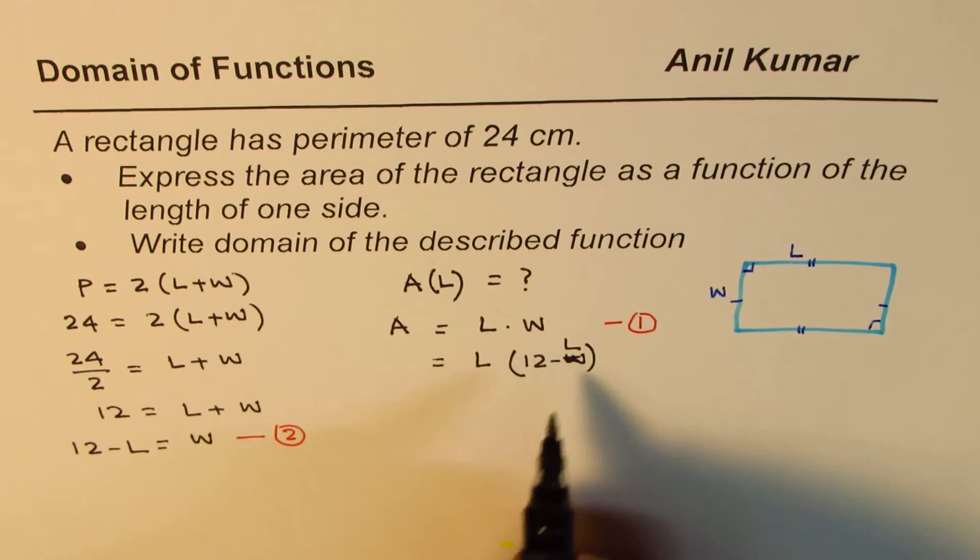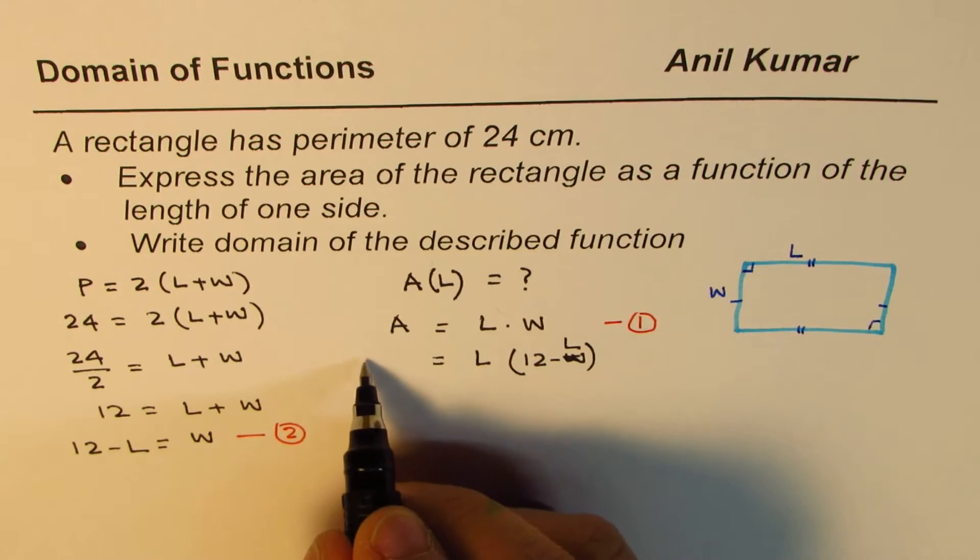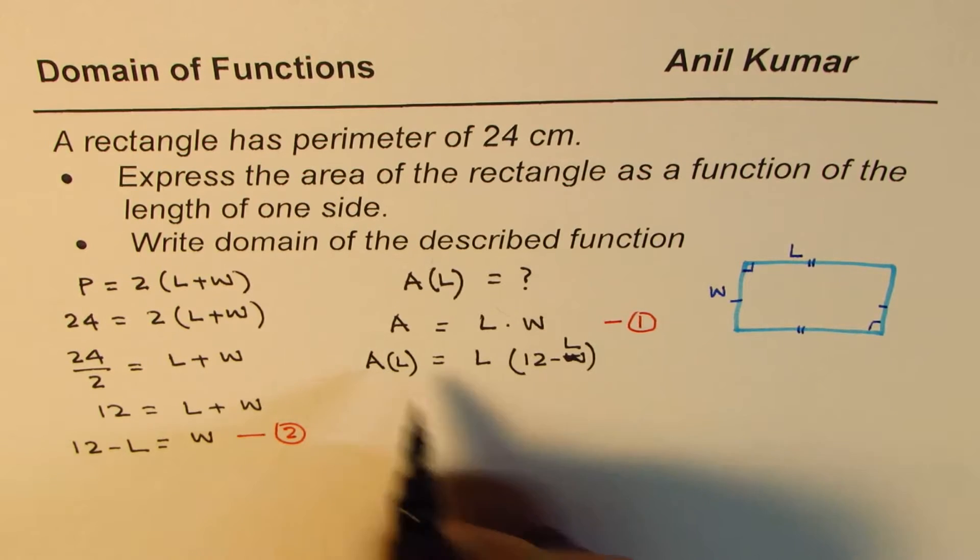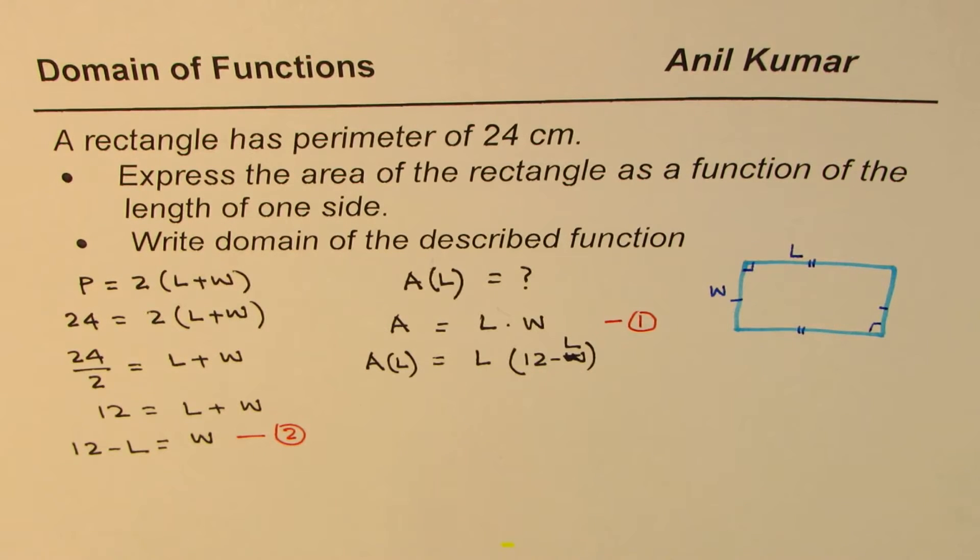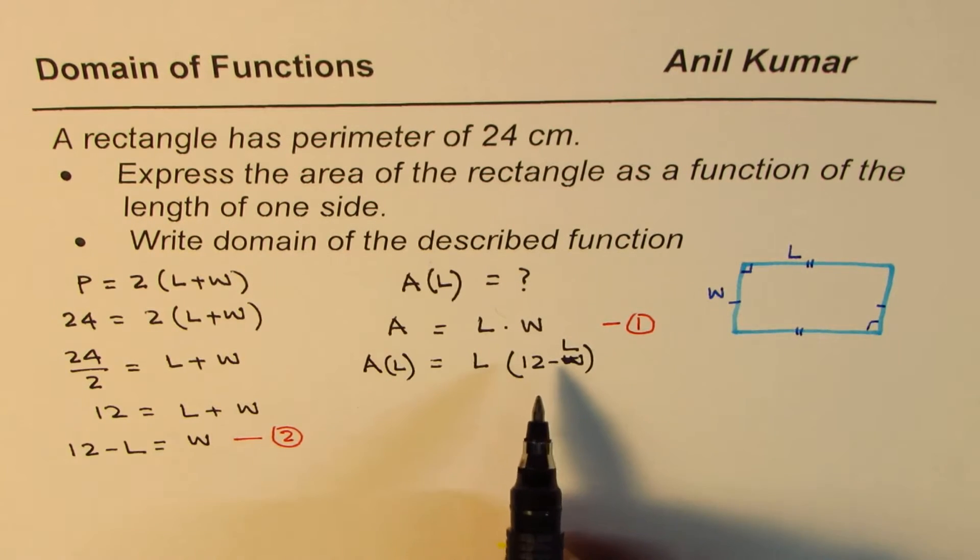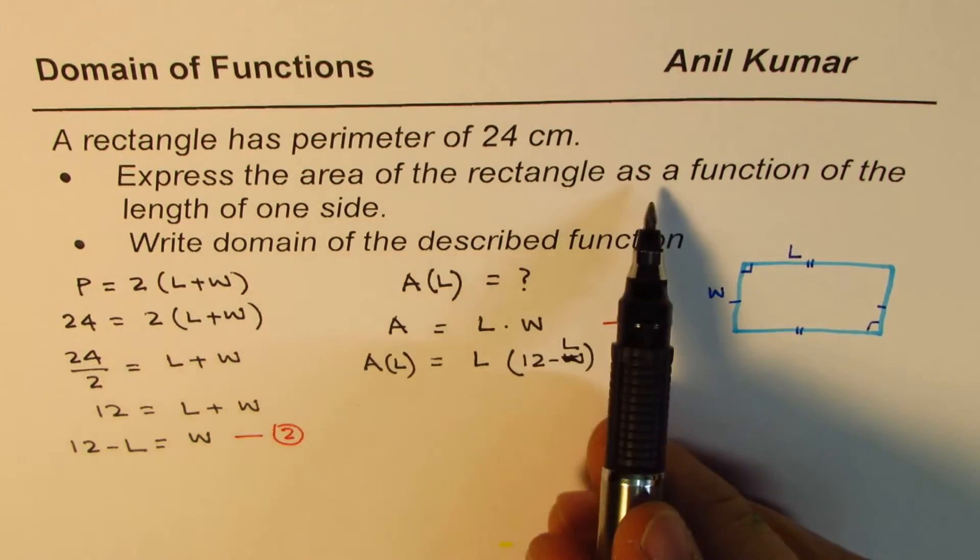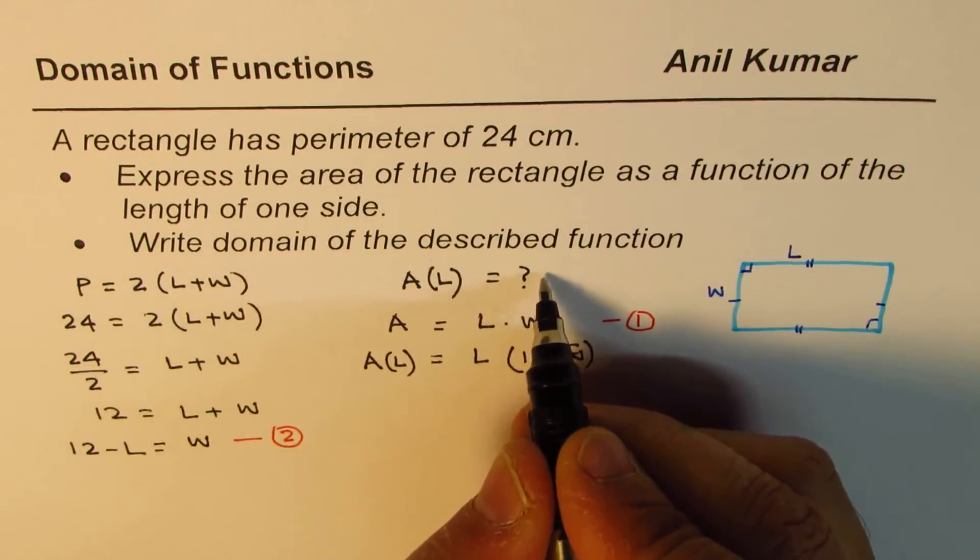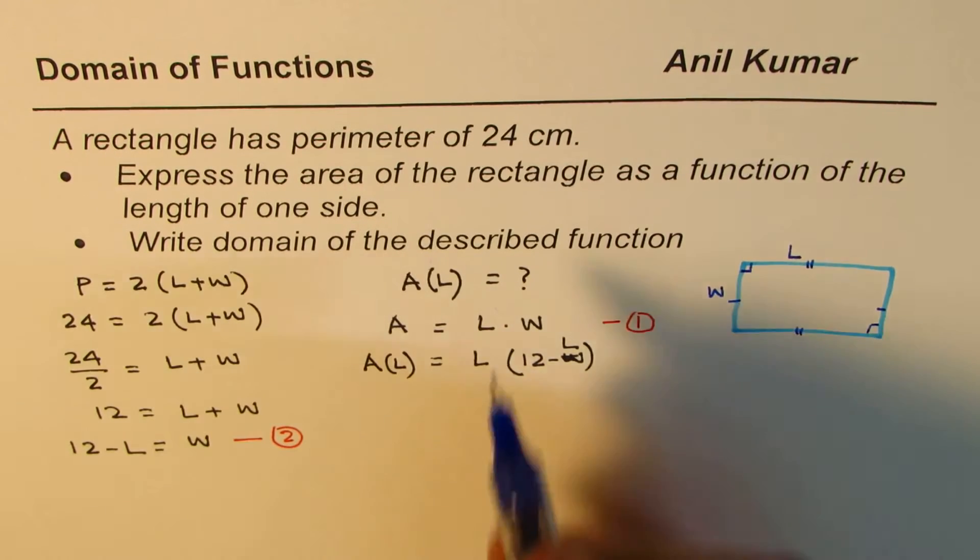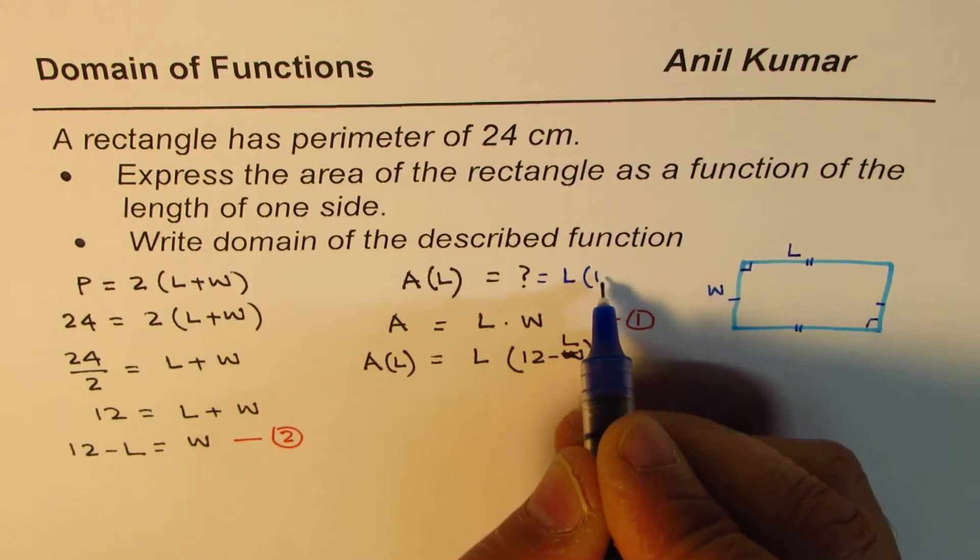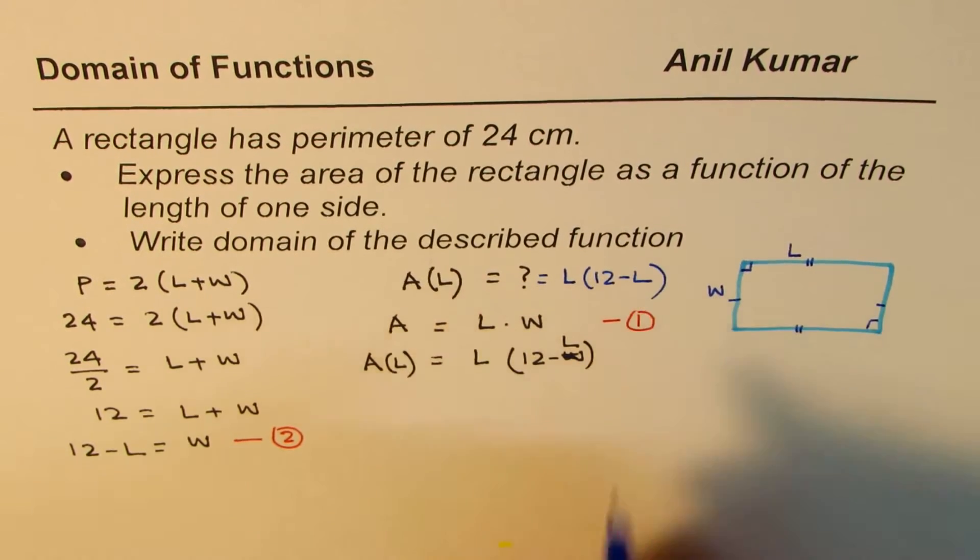As you can see here, this is an equation in one variable. So we could write this area as a function of L. That is function notation. So we get our area in this form. So that is express the area of a rectangle as a function of length of one side. So we could write this as our answer: A(L) equals to length times 12 minus length.